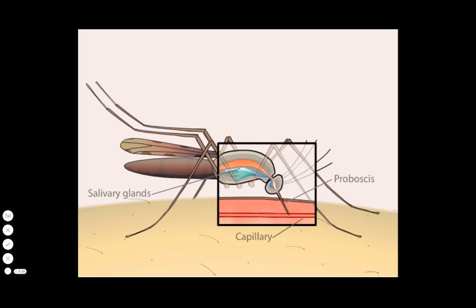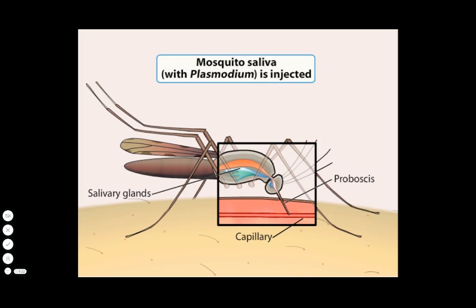An infected female mosquito transfers the parasite to a human when she takes a blood meal. The parasite, in the form of sporozoites, is injected with her saliva, which contains an anticoagulant that promotes a steady blood flow.